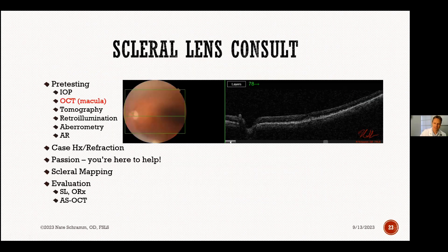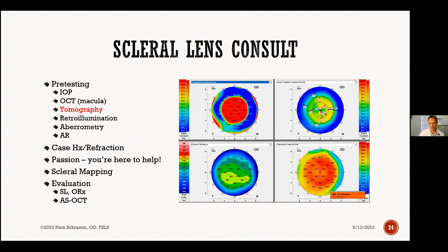When doing the scleral lens consult, my technicians do an OCT of the macula on every patient. Sometimes the corneas are so irregular we can't get a good scan, and then I'll do the scan once the scleral lens is on the eye. We had a patient with diabetic macular edema and keratoconus — we were only getting to 20/200, and it was the macular edema that was the limiting factor. That was the aha moment: we have to do OCT on every patient.